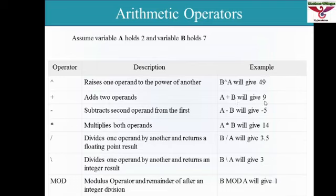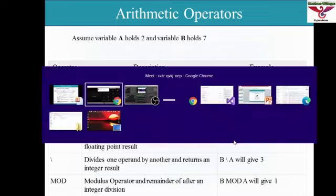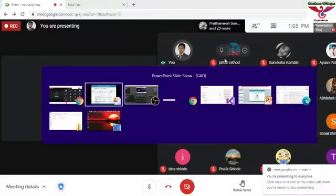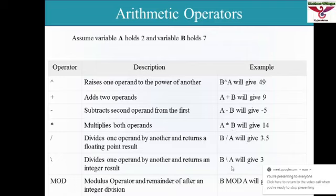7 plus 2 gives 9. 2 minus 7 gives minus 5. A multiplied by B — 7 into 2 — gives 14. B divided by A — 7 divided by 2 — gives 3.5 using the forward slash. Using the backslash, 7 divided by 2 gives integer output 3. The modulus operator: B mod A gives output 1.